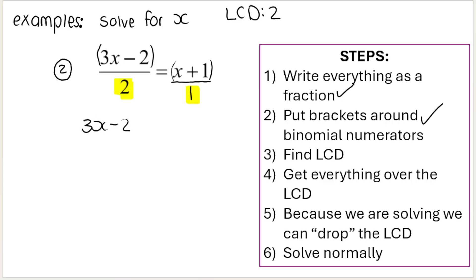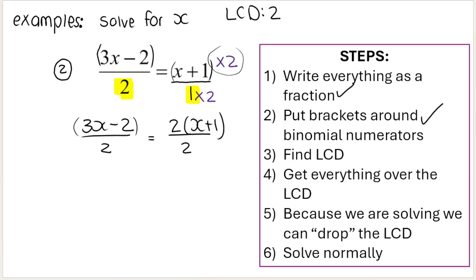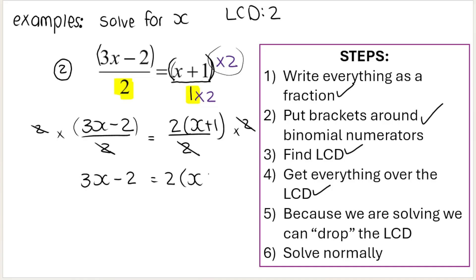Write both fractions over the LCD. The first fraction remains unchanged because it's already written over 2. For the second fraction, to get 1 to 2 you multiply by 2 — what you do to the bottom you do to the top — so I'm multiplying the bracket by 2. Remember what we're technically doing is multiplying both sides of the equation by 2, which is getting rid of the LCD. So we have 3x minus 2, and 2x plus 1. Now we solve normally.